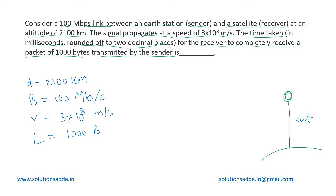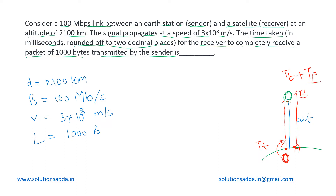We need to determine the time taken for the packet to travel from the sender at Earth to the receiver at the satellite. The total time will be TT plus TP — first we transmit the packet onto the link, which takes TT (transmission delay), and once transmitted, it propagates from point A to point B, which takes TP (propagation delay). Let's calculate TP and TT independently.